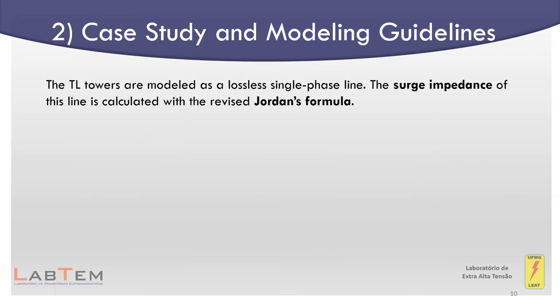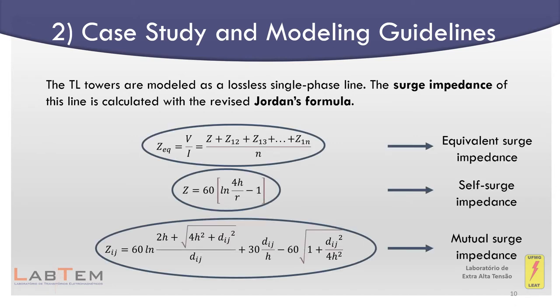The transmission line towers are modeled as a lossless single-phase line. The surge impedance of this line is calculated with the revised Jordan's formula. Considering that the tower can be represented by N vertical conductors connected at the current injection point, it is possible to represent the whole multi-conductor system as a single transmission line with an equivalent surge impedance given by the formula.